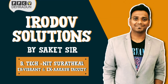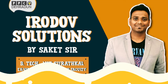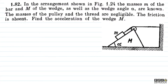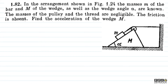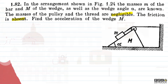Hello everyone, I am Sakeet Bajpayee, Director of Pryas Physics Classes, Dehradun. Welcome students. Let's have a look at this beautiful problem from Irodov. The question says: in the arrangement shown in figure 1.24, the masses m of the bar and capital M of the wedge, as well as the wedge angle alpha are known. The masses of the pulley and the thread are negligible. The friction is absent. Find the acceleration of the wedge, capital M.